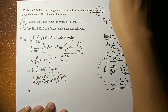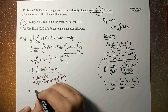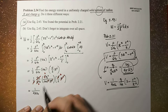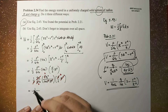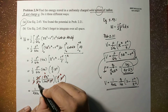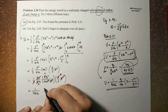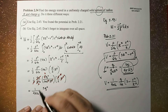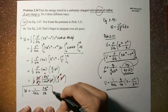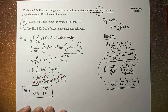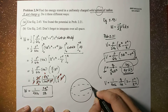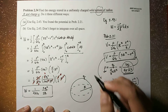After all cancellations, the final result is W equals 1 over 4π epsilon-naught times 3Q squared divided by 5R. This is the energy stored in a uniform sphere of radius R and total charge Q.